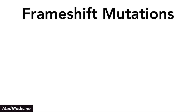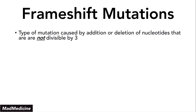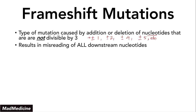Frameshift mutations are important because this is a type of mutation that occurs by adding or deleting nucleotides that are not divisible by three — so plus or minus one, two, four, five, etc. These are called frameshift mutations because they shift the entire reading frame used to create the protein, resulting in misreading of all downstream nucleotides. This is one of the most dangerous types of mutations because depending on where it happens, it can completely ruin the protein or even make it a dangerous protein.